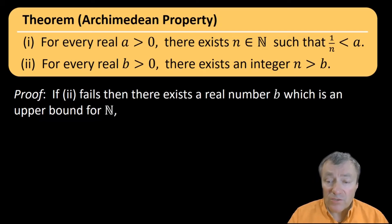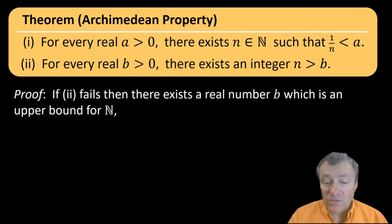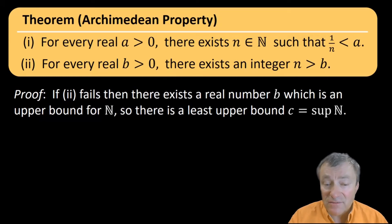And I'll prove part two first, and I'll do that by contradiction. So assuming the statement two fails, that would mean that there's a real number b which is an upper bound for all the natural numbers. So according to the least upper bound property, there would have to be a supremum for all the natural numbers, and I could call that number c. Now c minus one is less than c, so c minus one cannot be an upper bound for the natural numbers, right? It's less than the least upper bound, so then it can't be an upper bound.